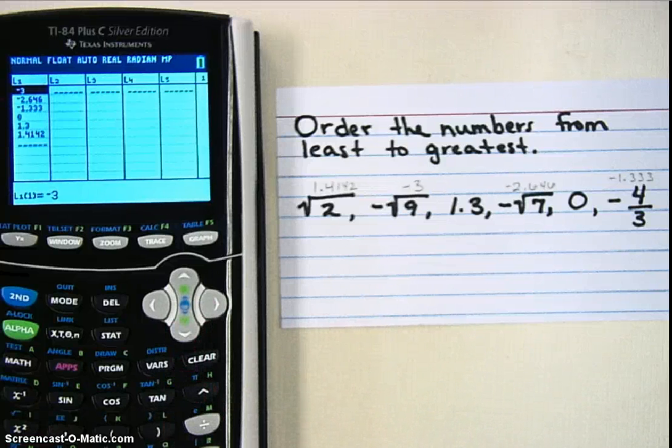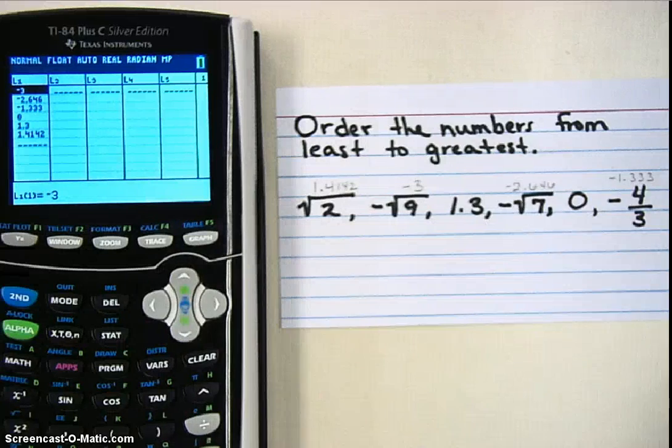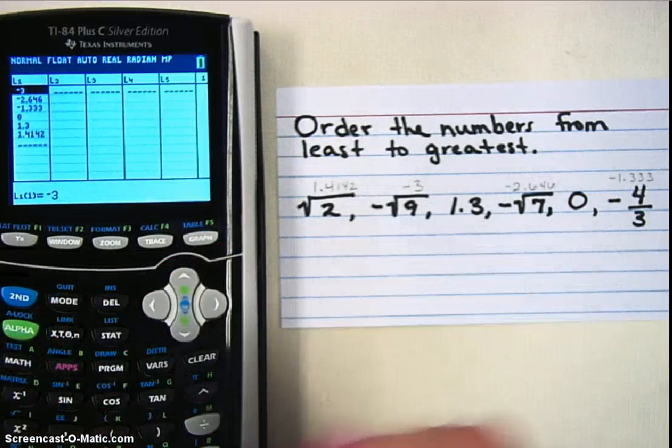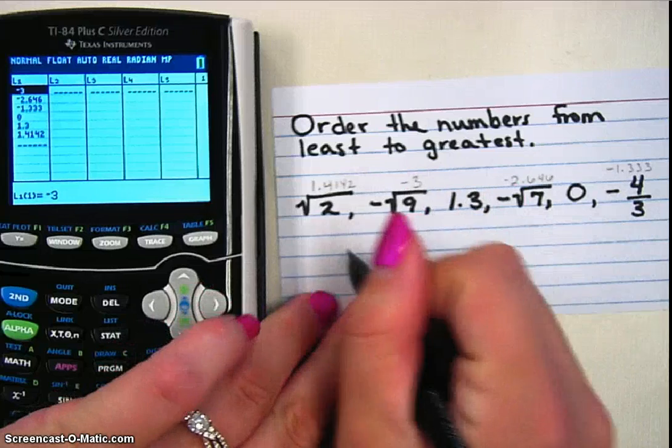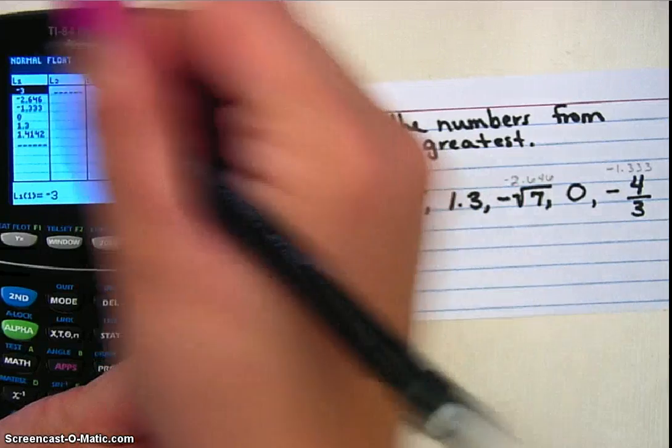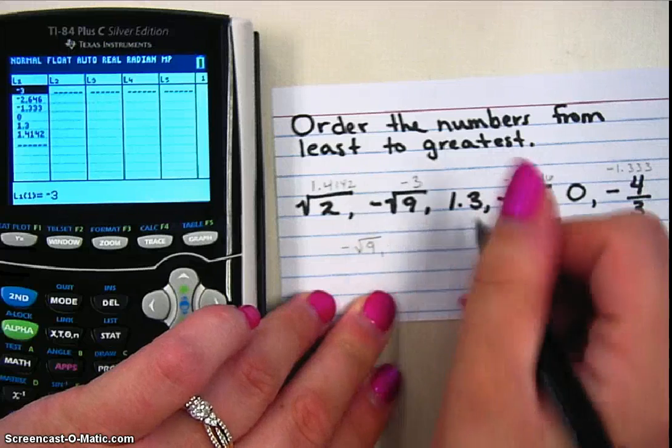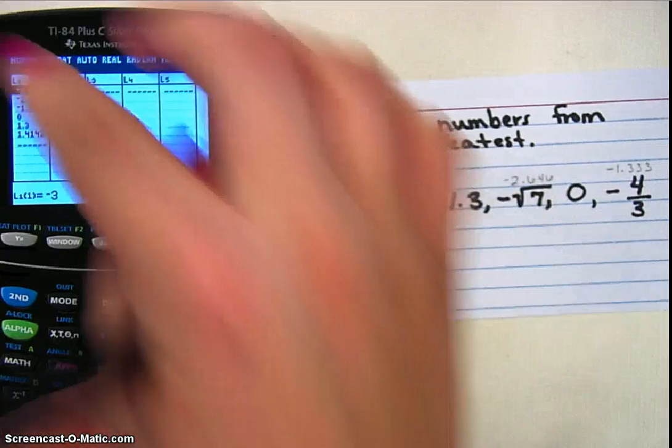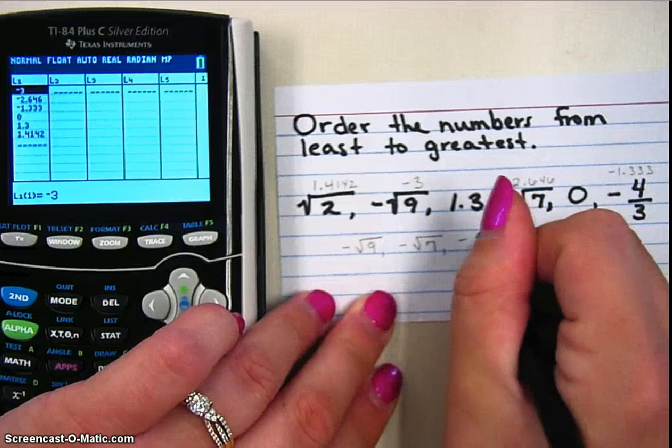So when I go to write my answer, I'm going to write the original numbers. So negative square root of 9 was first, then negative 2.646, which is negative square root of 7, then negative 4 thirds.